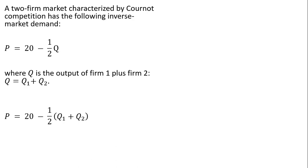If we're going to make a substitution, we can substitute out this Q for Q subscript 1 plus Q subscript 2. I do that right here. And if we want, we can distribute this minus 1 half through the parentheses. Let's say that the marginal cost of each firm is constant at $2.